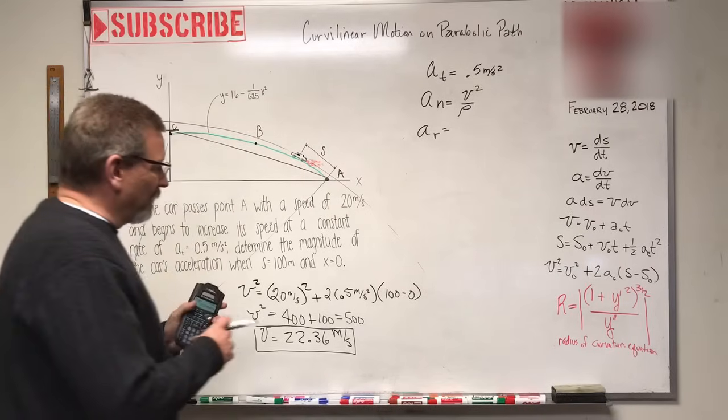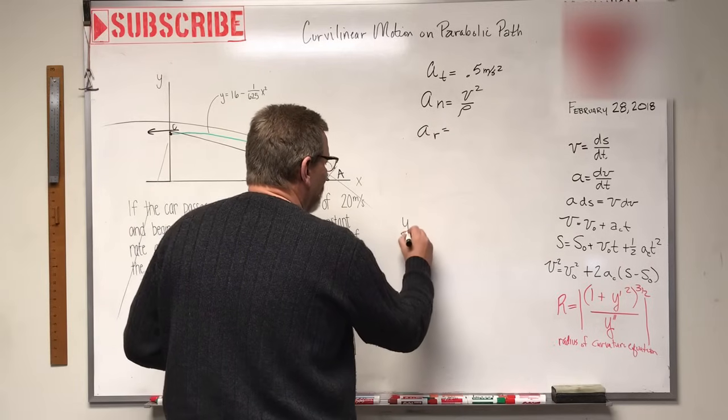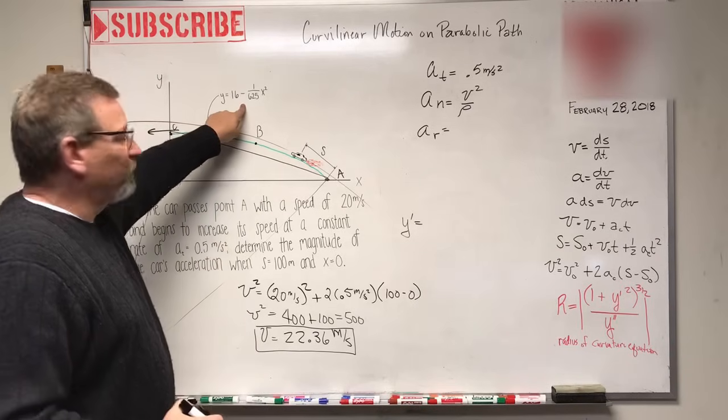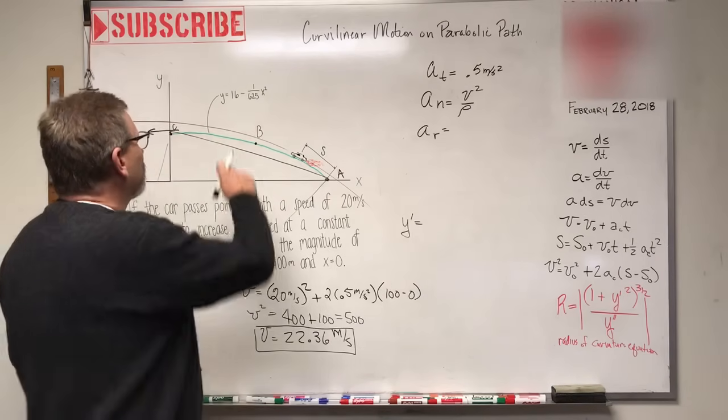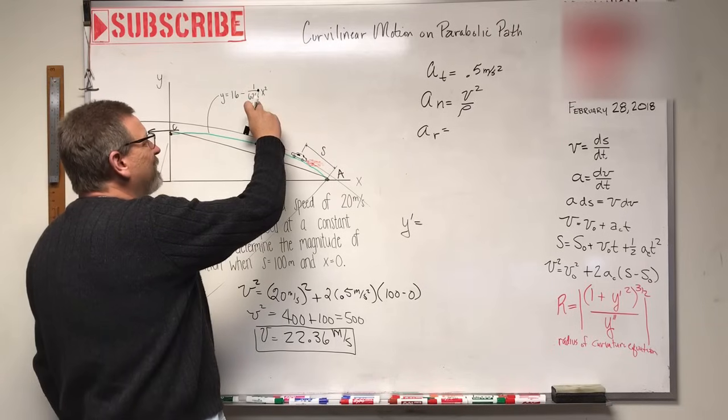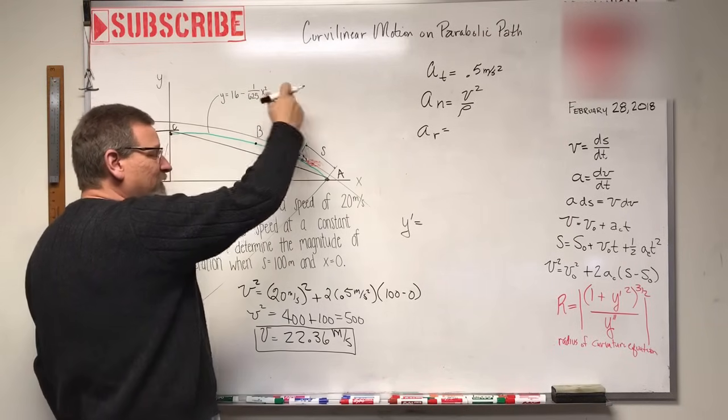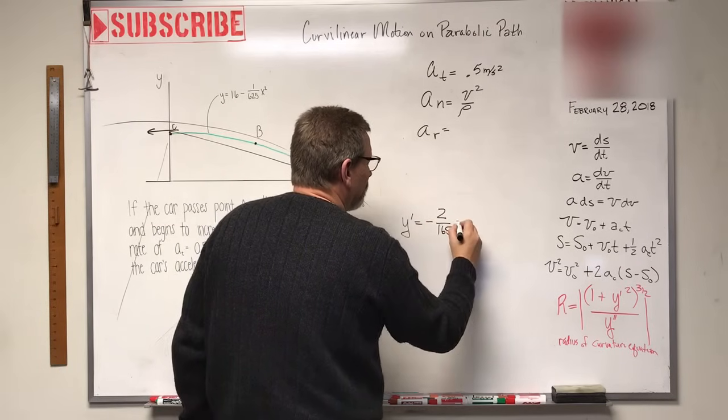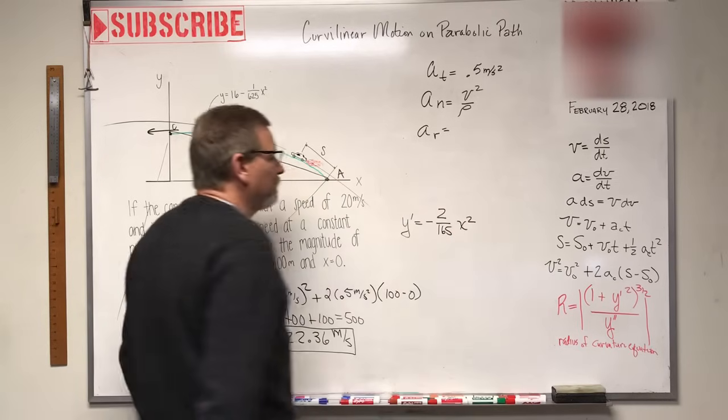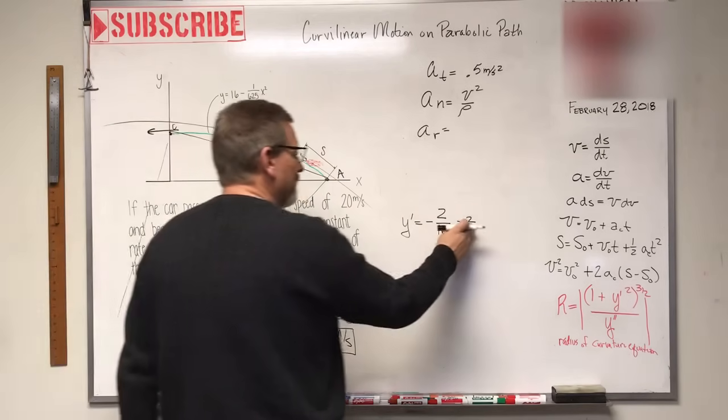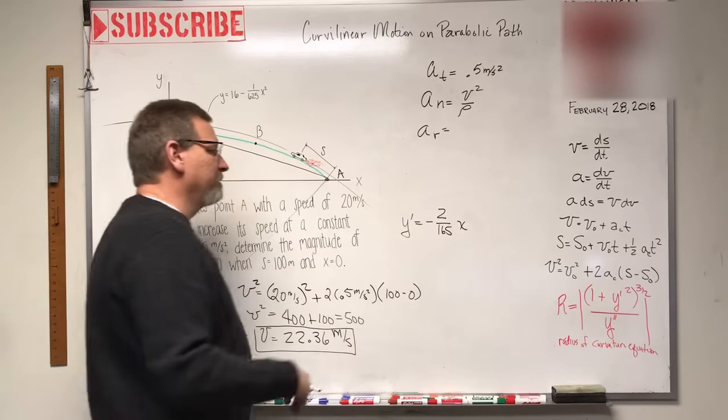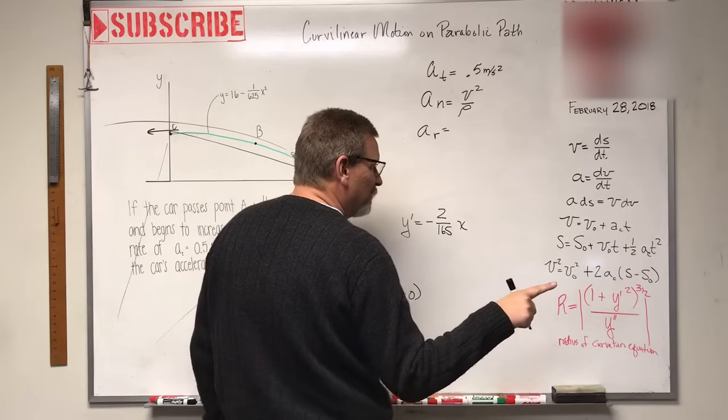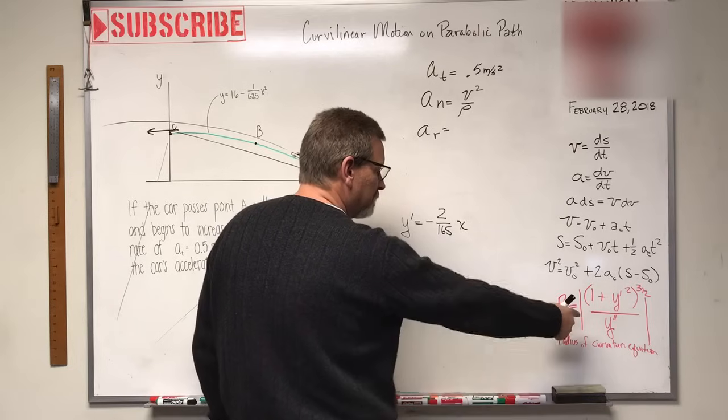We have an equation for y with respect to x, so let's do y prime. I'm going to take the derivative of this function one time. Constants go away, this guy here is going to be two times one over 625 times x, so we call that negative two over 625 x. Remember we reduce our exponent there.